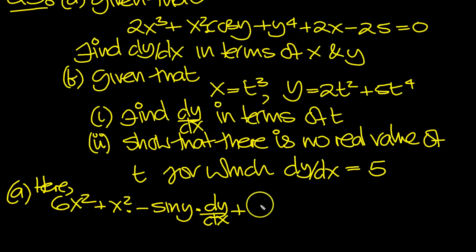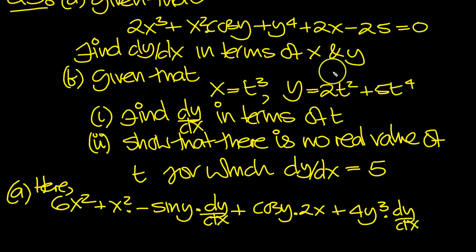That's u times v, plus v cosine y times du which is 2x. So that's that product differentiated, plus 4 times something cubed multiplied by the something differentiated dy/dx, plus 2.